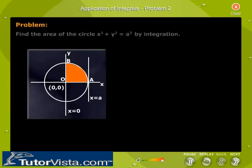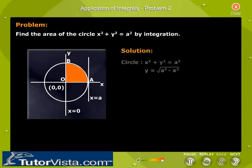The problem: Find the area of the circle x squared plus y squared equals a squared by integration. The solution: The given circle is x squared plus y squared equals a squared, so y equals the square root of a squared minus x squared.